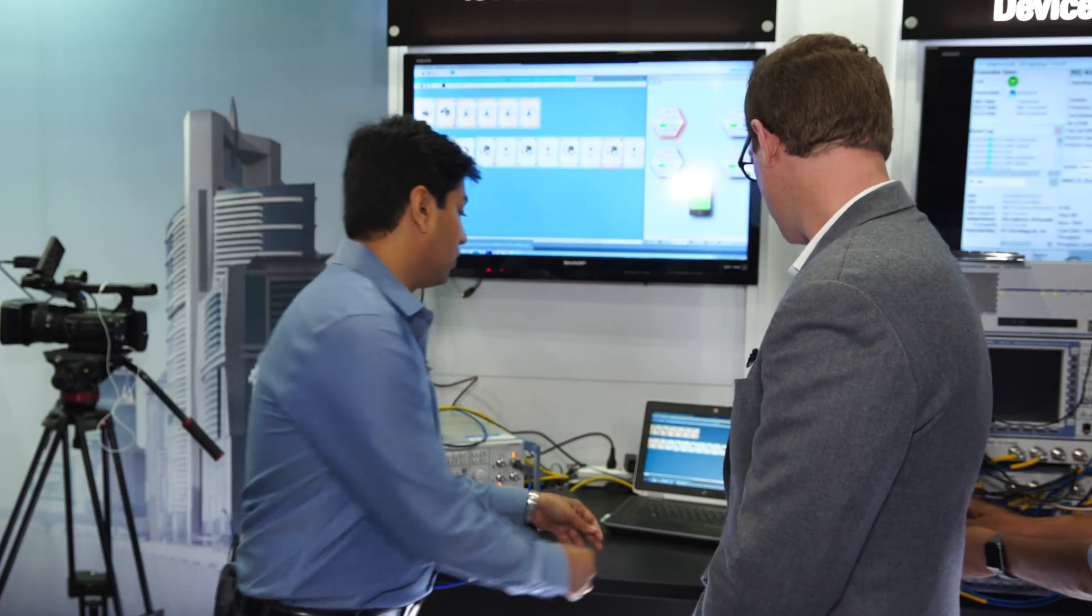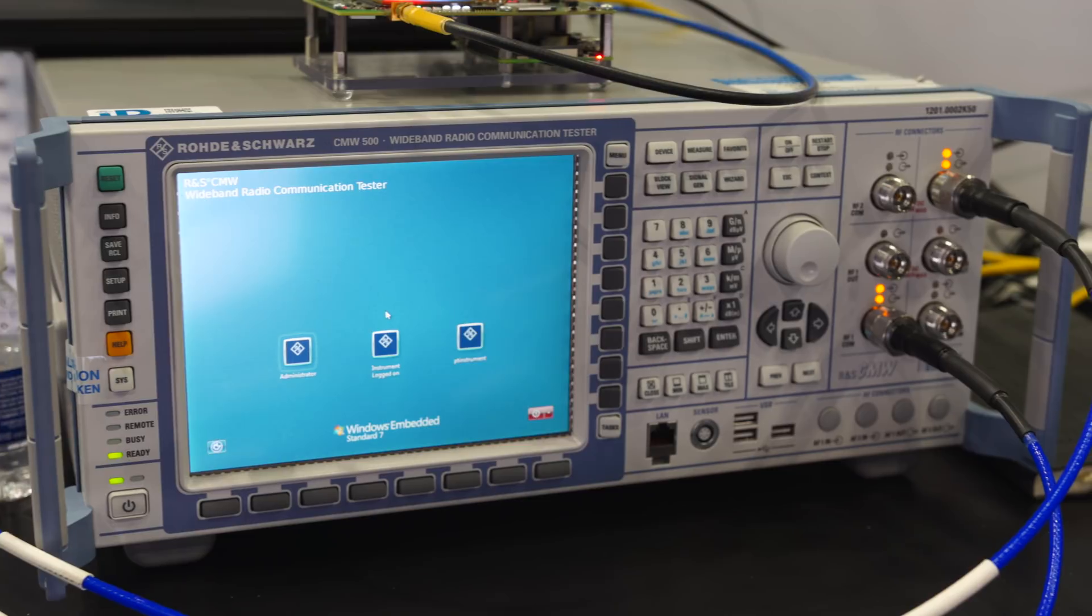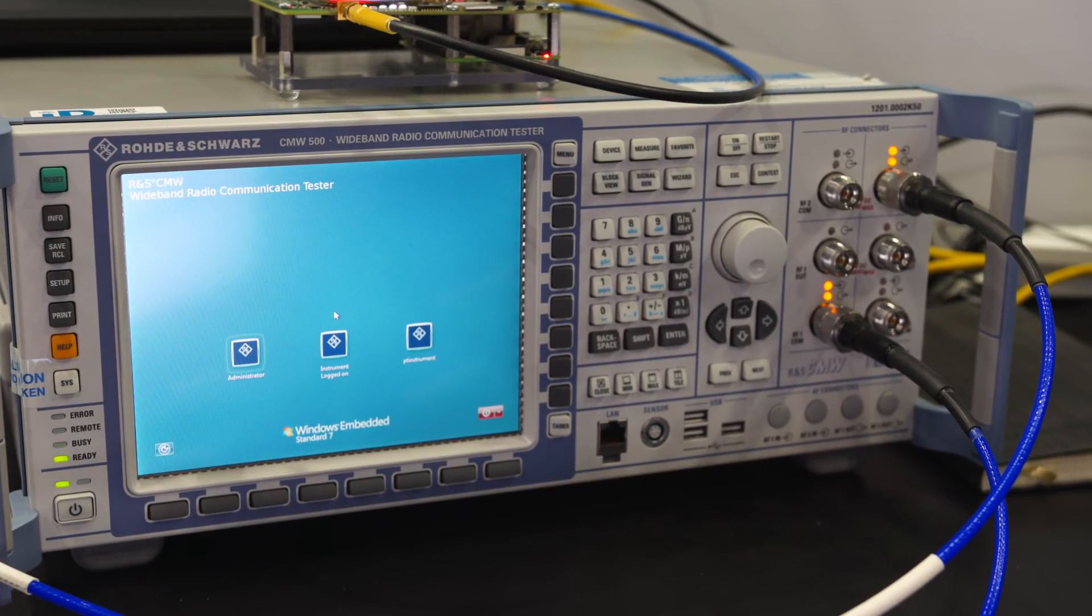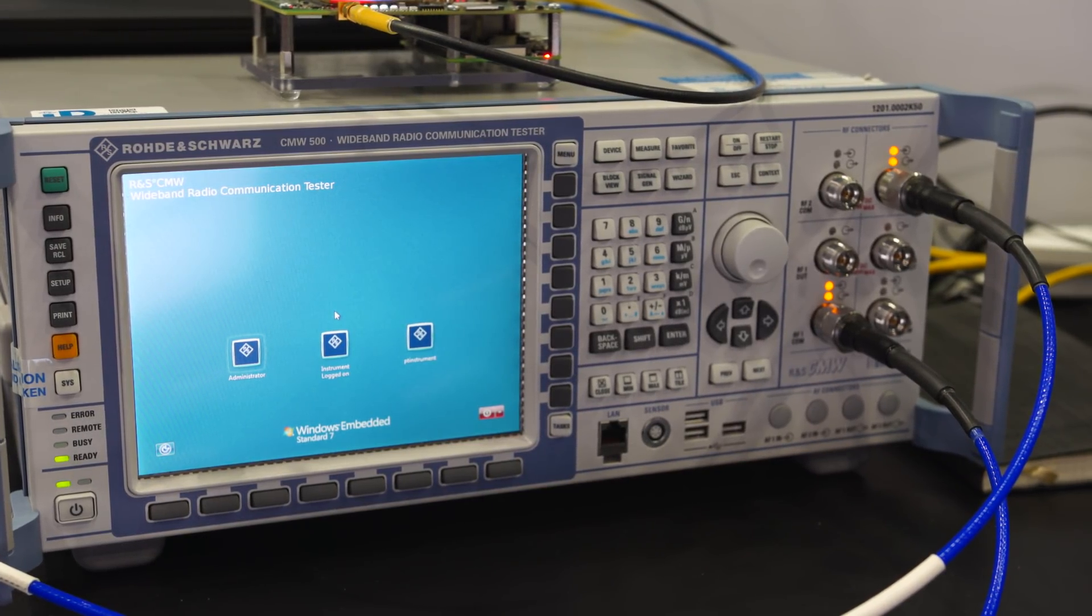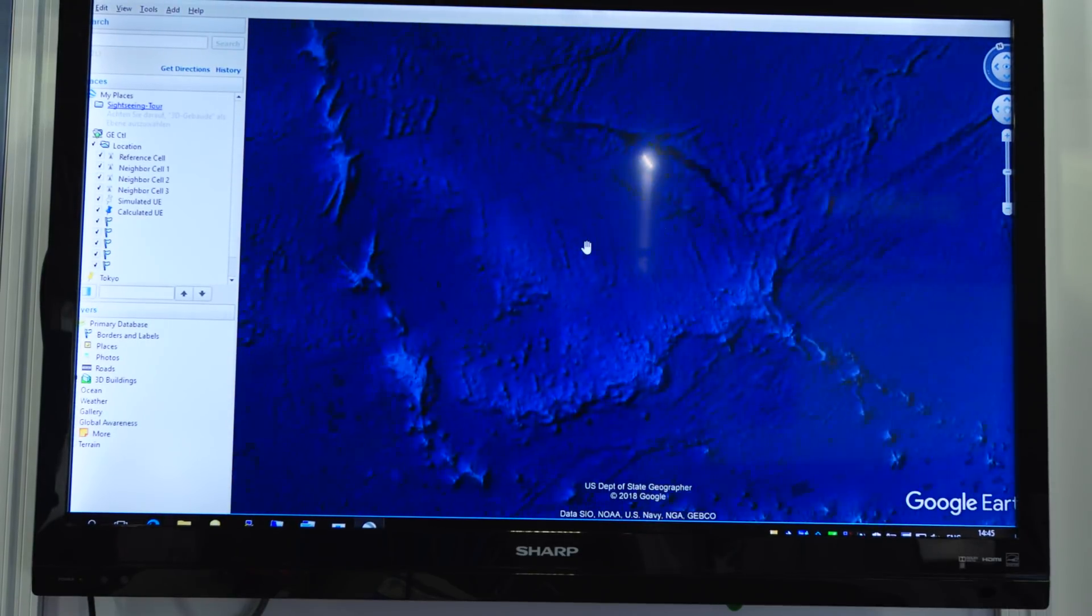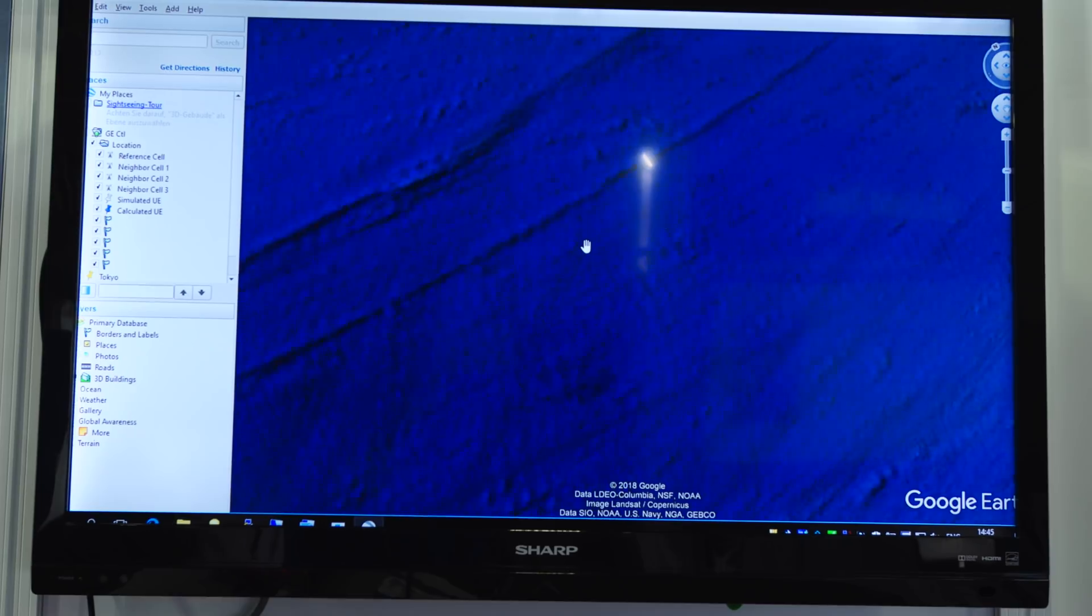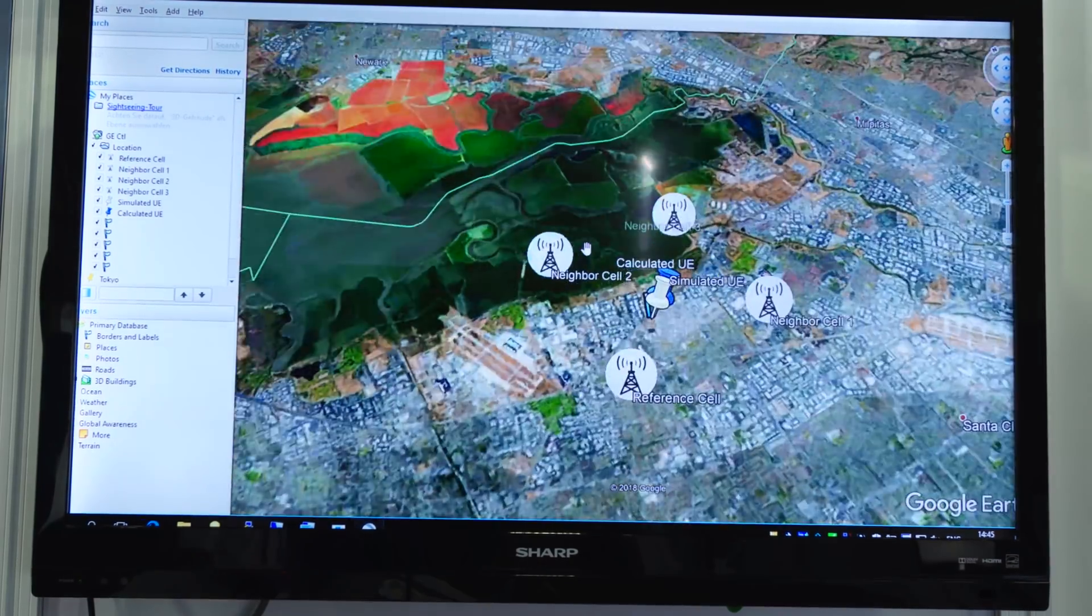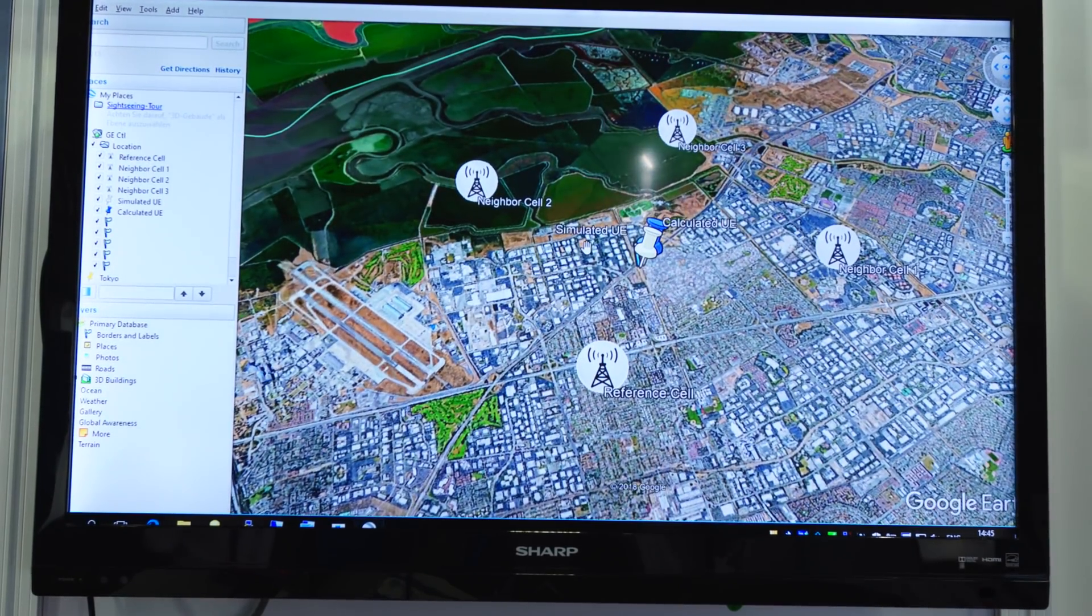And what we have done here is we have hooked up Google Earth. So all the coordinates that the device is getting, we are plotting them on Google Earth. And as the device gets new coordinates, it moves between the Bay Area and Tokyo. We show you a simulated and a calculated UE position, thereby giving you a delta.